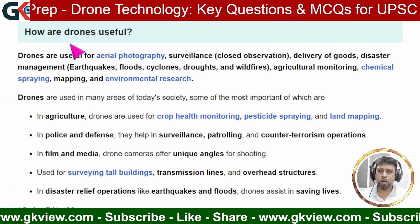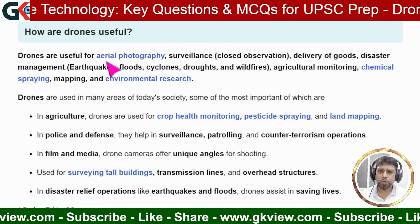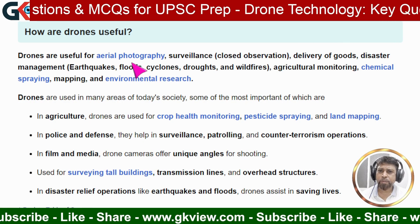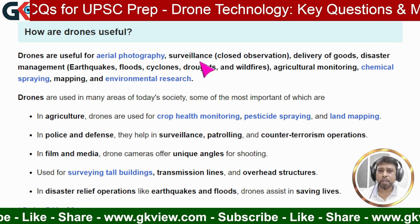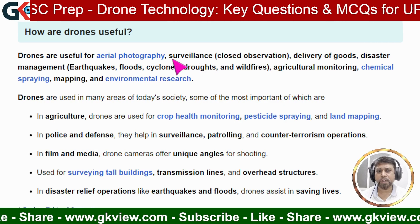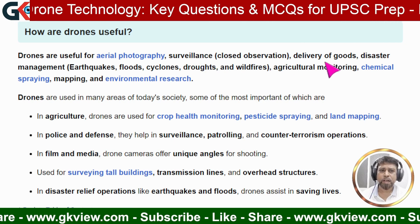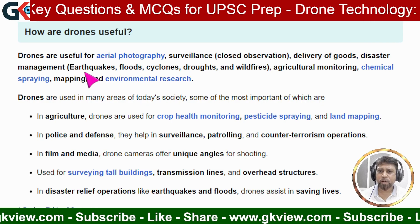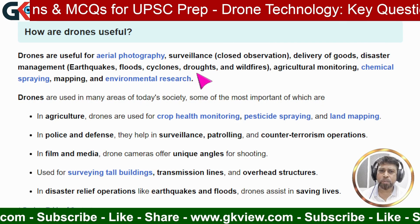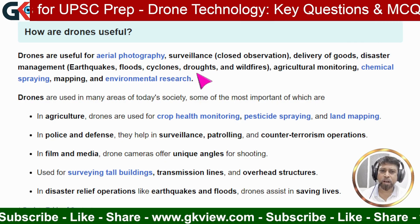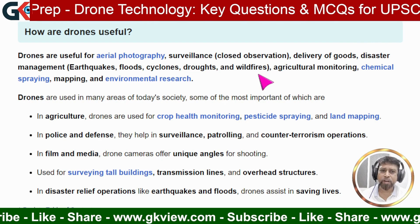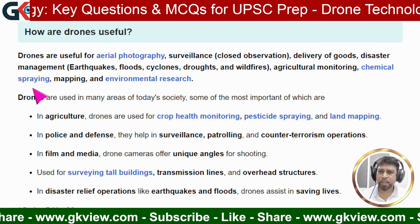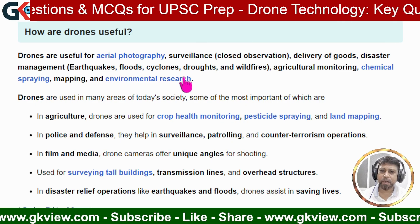The next question is: how are drones useful? Drones are useful for aerial photography (photographs taken from a height above ground level), surveillance (close observation), delivery of goods, disaster management (earthquakes, floods, cyclones, droughts, and wildfires), agricultural monitoring, chemical spraying, mapping, and environmental research.